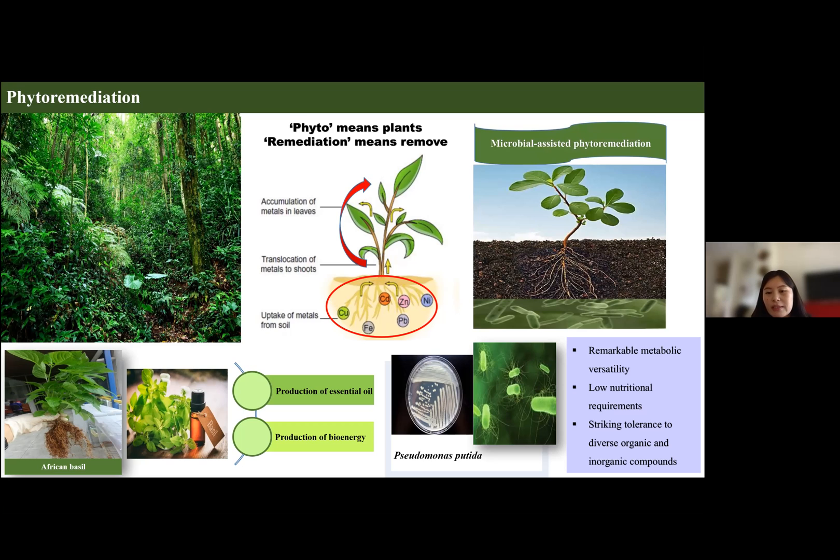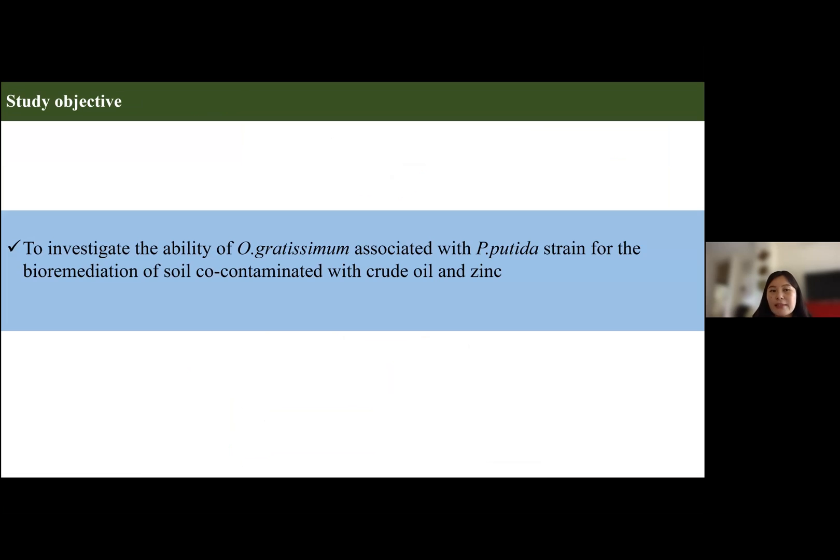Studies have suggested that a combination of such plant with the microbe can be used for remediation of sites contaminated by both heavy metal and petroleum products. Hence, the objective of my research was to use a combination of African basil with Pseudomonas putida for removal of crude oil and zinc, treating soil contaminated by both.